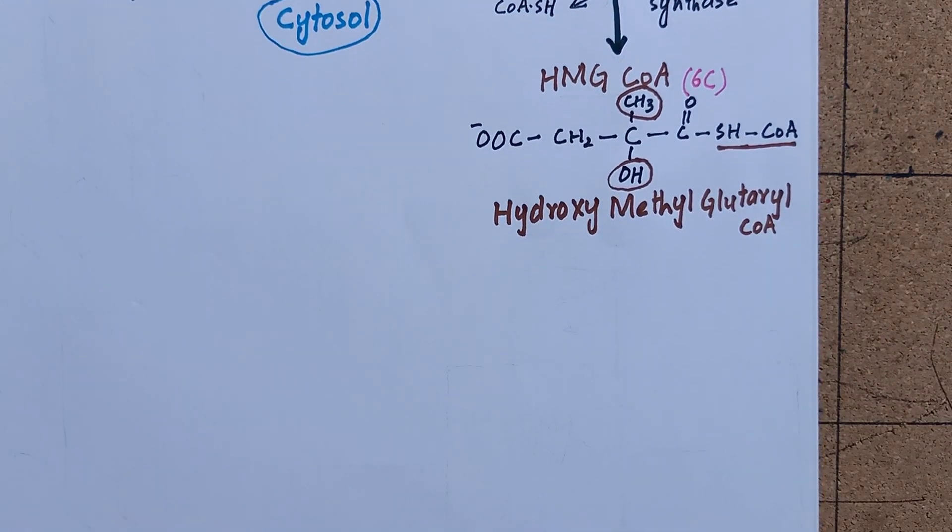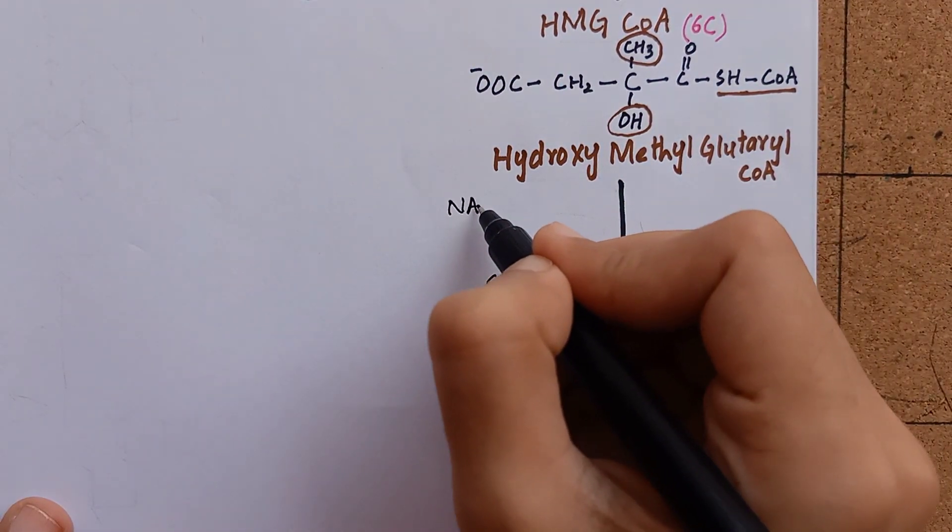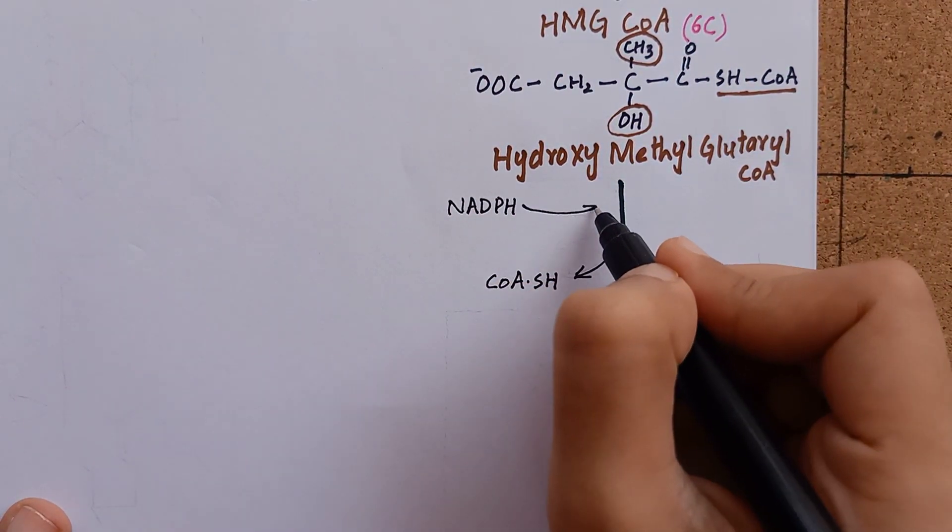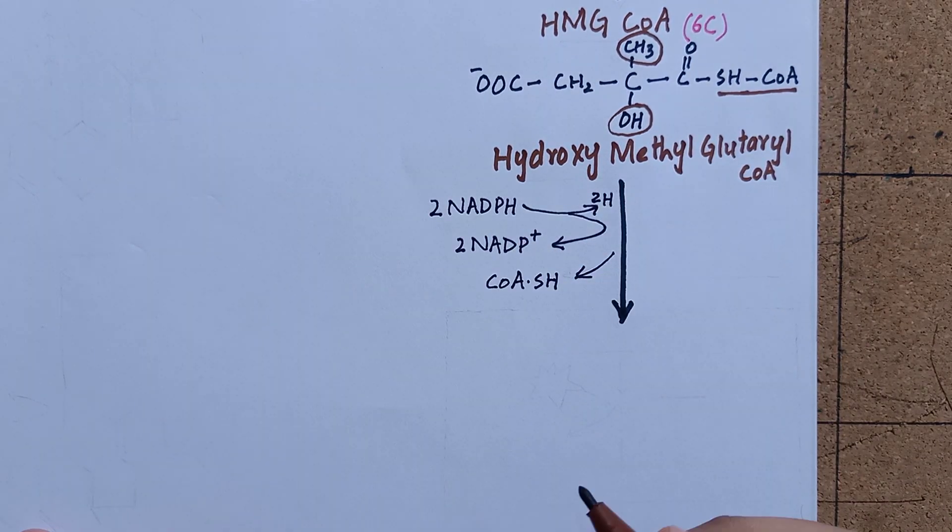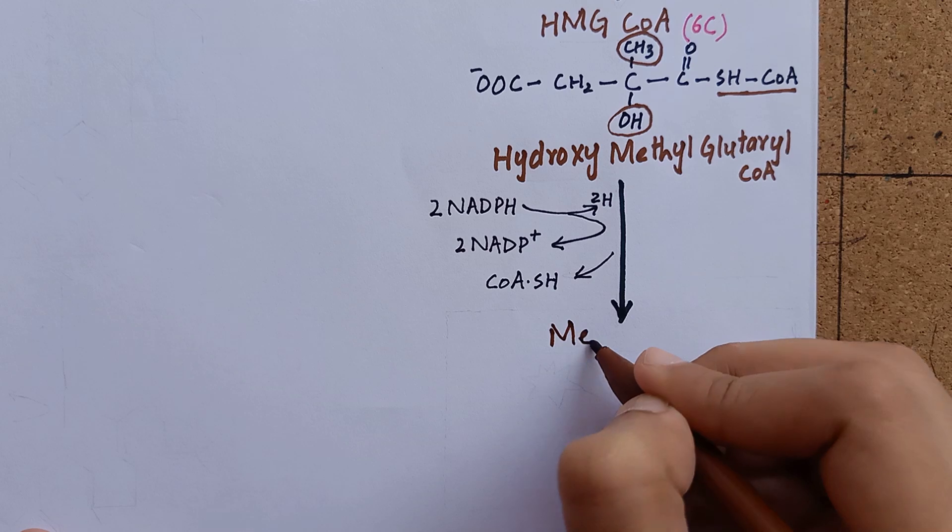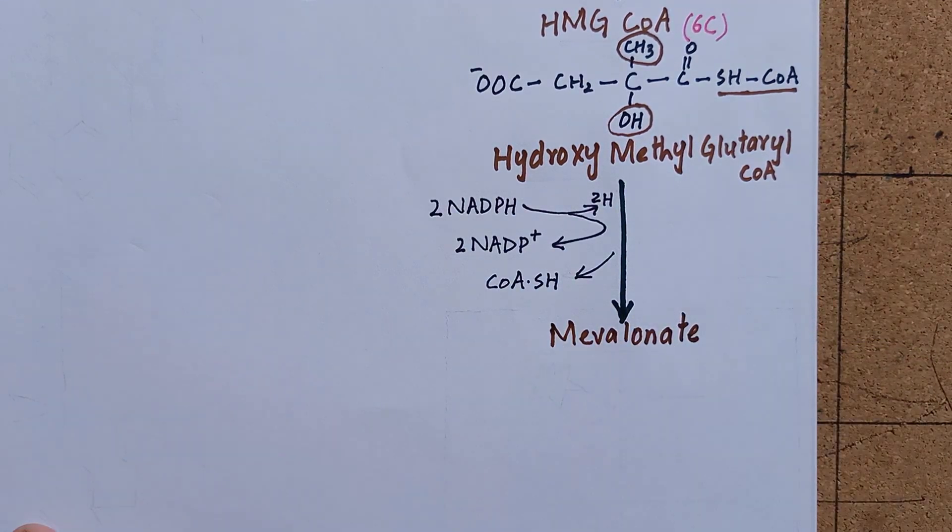We don't need Coenzyme A any further, so it will leave this molecule. NADPH will come to cause the reduction of the remaining molecule. Reduction means the addition of hydrogen atoms. The hydrogen atoms will stabilize the configuration of the remaining molecule, which will now become mevalonate, which is a 6-carbon molecule.